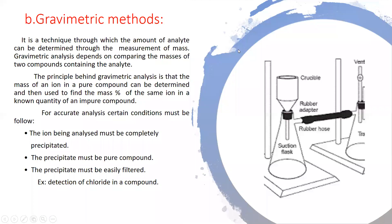Let's know the brief introduction about the second method of chemical analysis. The second method is gravimetric methods. It is a technique through which the amount of analyte can be determined through the measurement of mass.